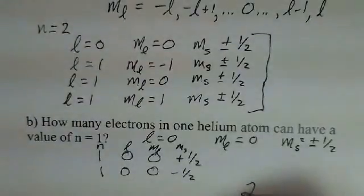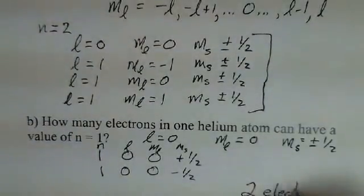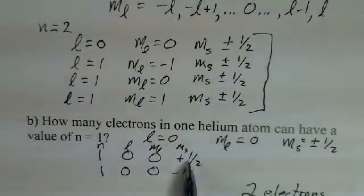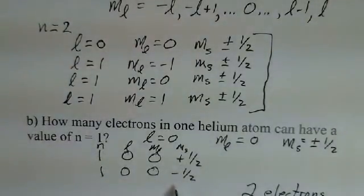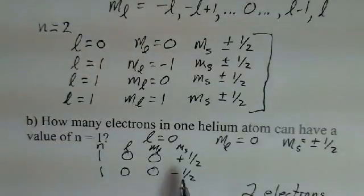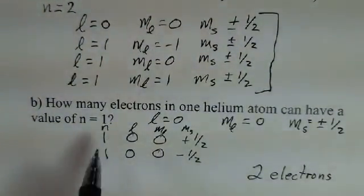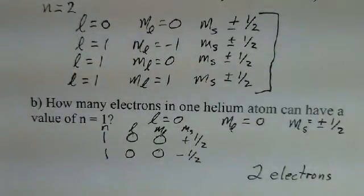So there are two electrons that are allowed. There is no plus 2 m sub s number, or minus 3, or minus 1, or plus 1. The list of the possible numbers for m sub s only plus 1 half or minus 1 half. So only two electrons. That uses up all the possible combinations when n is equal to 1.